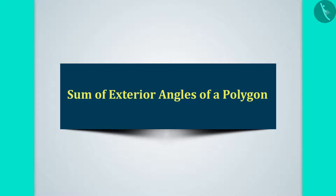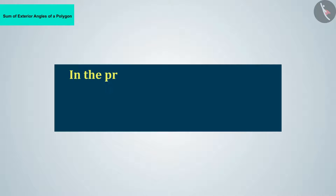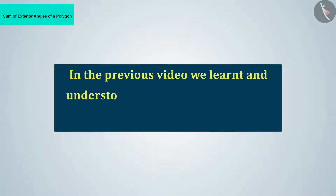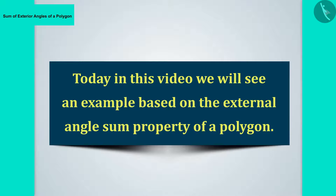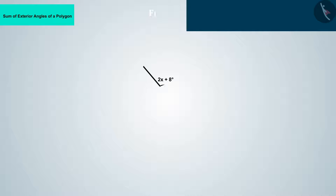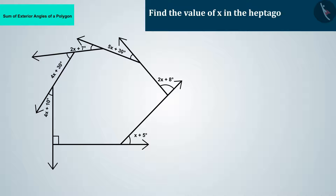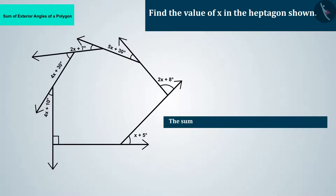Welcome to this video. In the previous video we learnt about the external angle sum property of a polygon. Today we will see an example: find the value of x in the heptagon shown. The sum of all exterior angles of a polygon is 360 degrees.